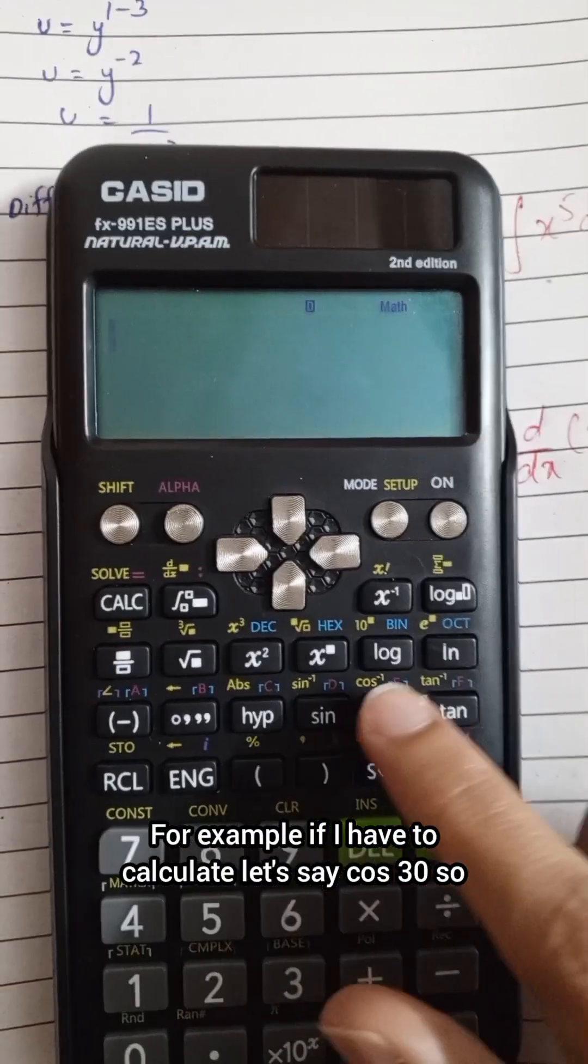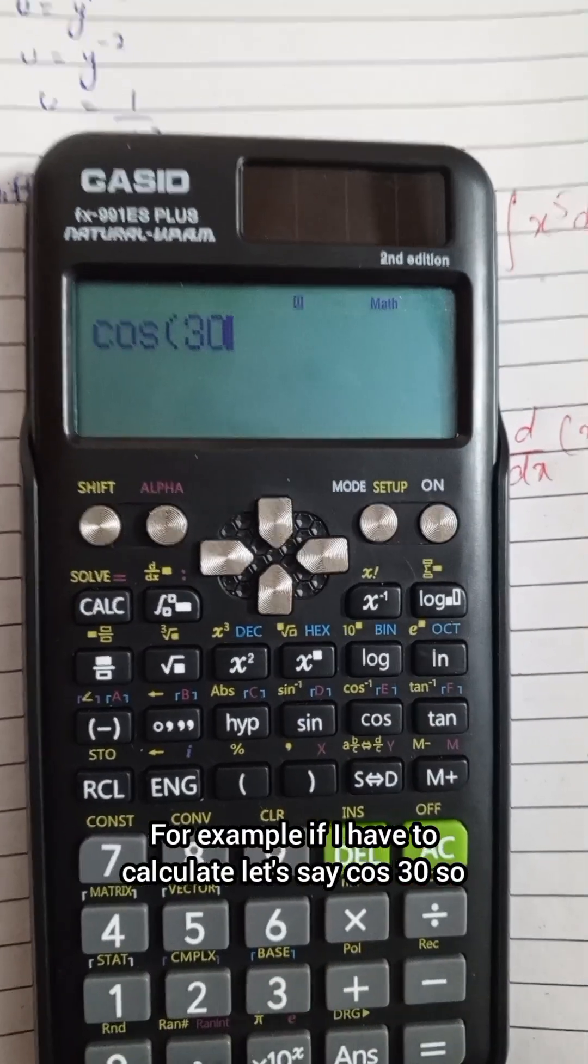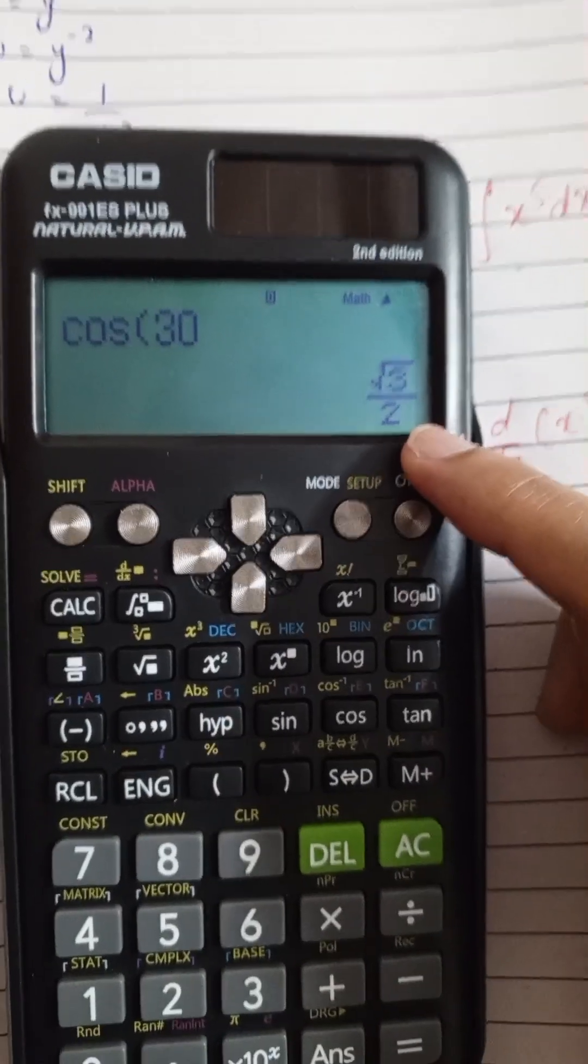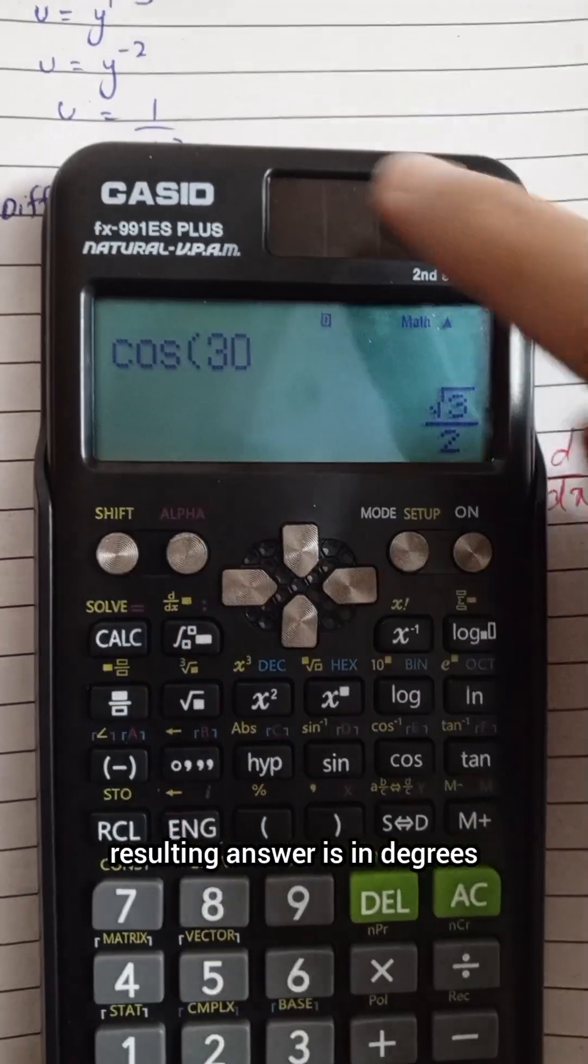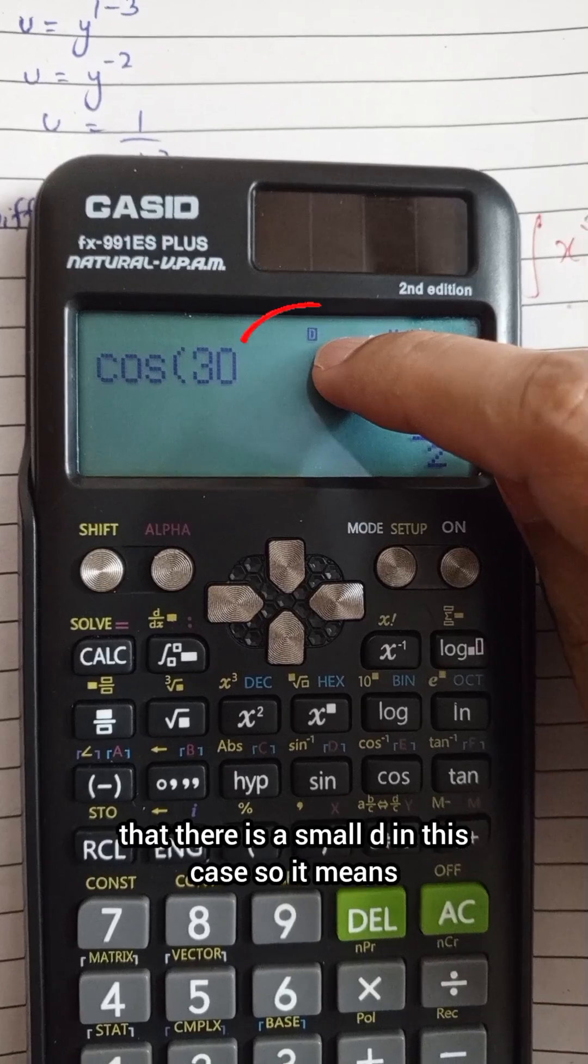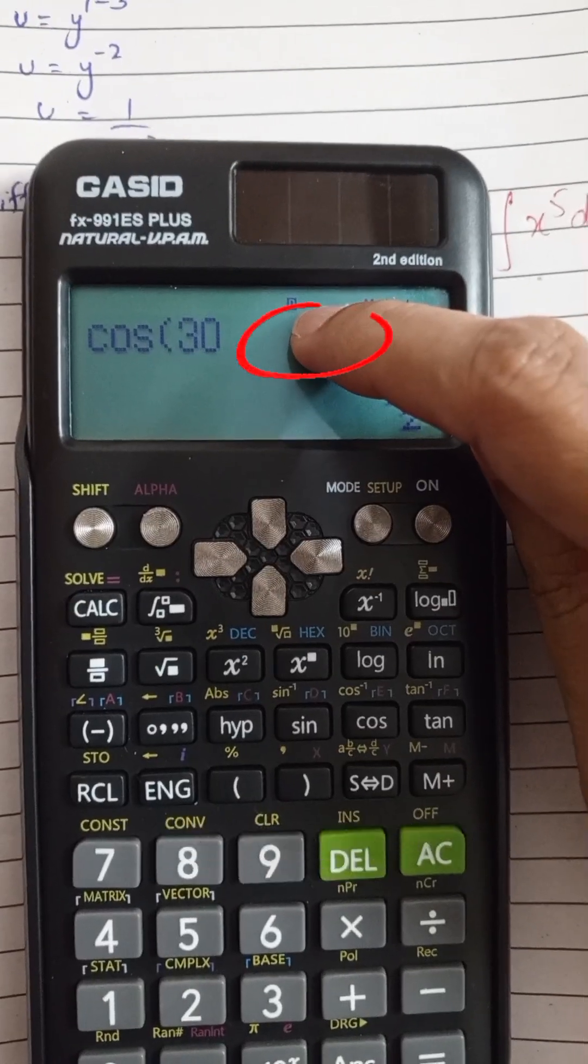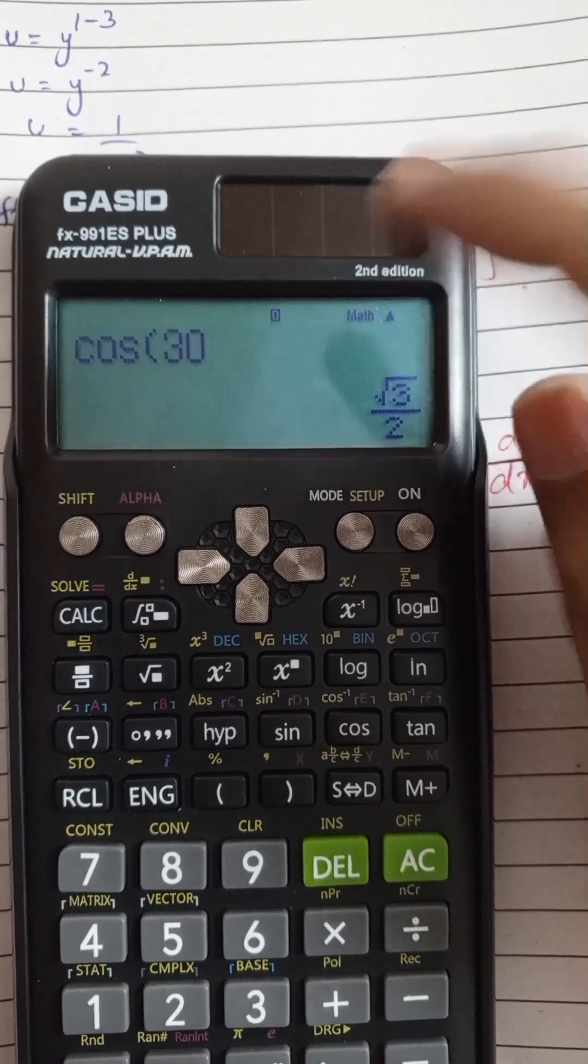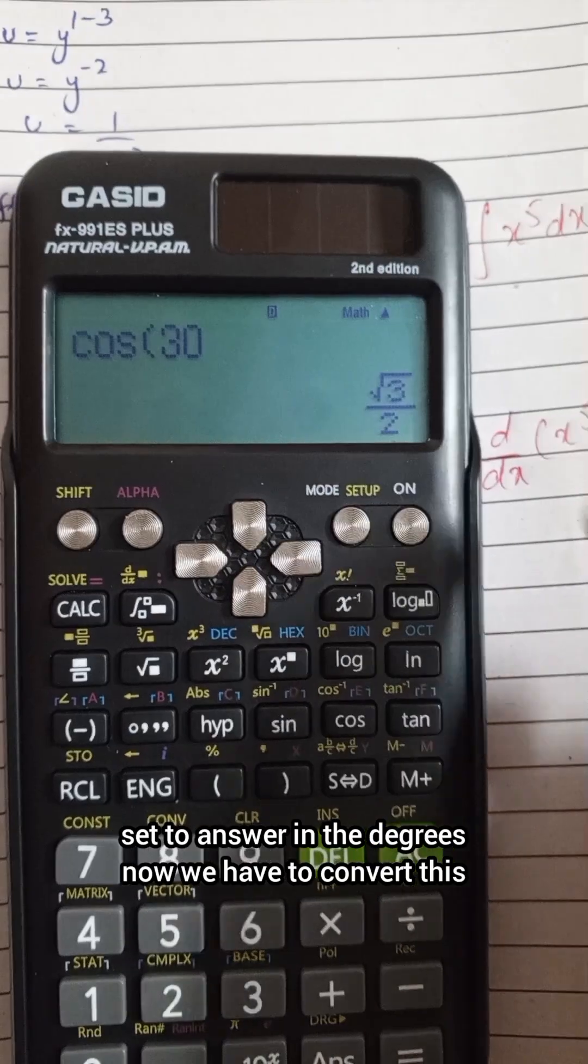if I have to calculate, let's say cos(30), the resulting answer is in degrees. Here we can see there is a small 'd' in this case, which means your calculator is set to answer in degrees.